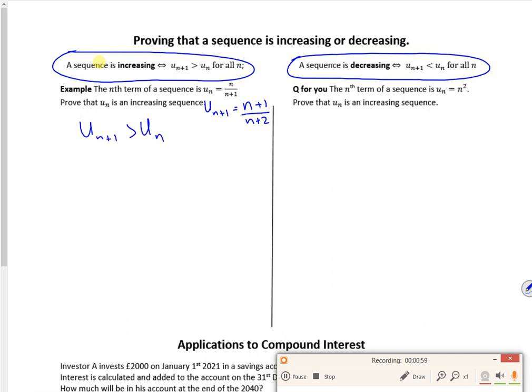Now in the past we used to say if it's increasing, the difference is positive, so un plus 1 minus un is greater than 0. But we're doing it a little bit different this year, it's a little bit easier. So I've got n plus 1 over n plus 2 is greater than n over n plus 1.